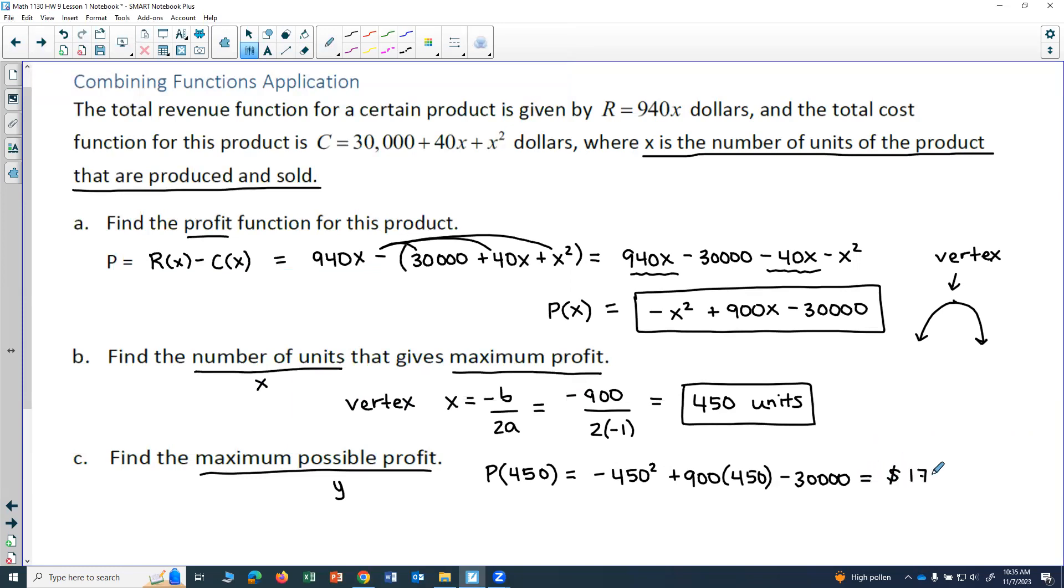So 172,000. And I miswrote it. 172,500. And 500. So that would be my maximum profit. That's the y value of the vertex.